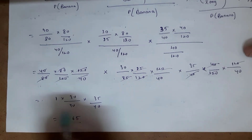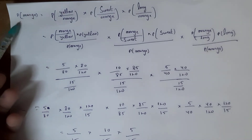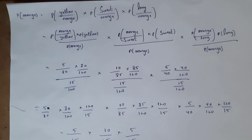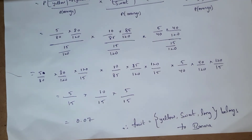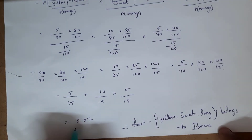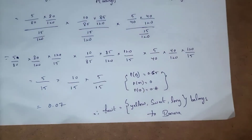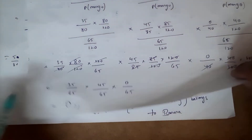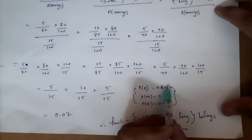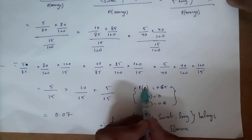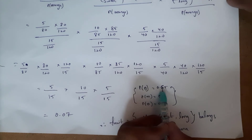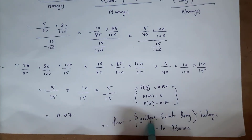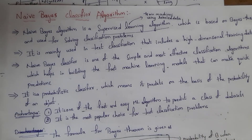For orange: P(X|orange) = P(yellow|orange) × P(sweet|orange) × P(long|orange). After applying Bayes' theorem and substituting values, the probability of orange comes out to 0.07. So we have: P(mango) = 0, P(banana) = 0.65, P(orange) = 0.07. The highest probability is banana at 0.65, so this new fruit with yellow, sweet, and long properties belongs to banana.